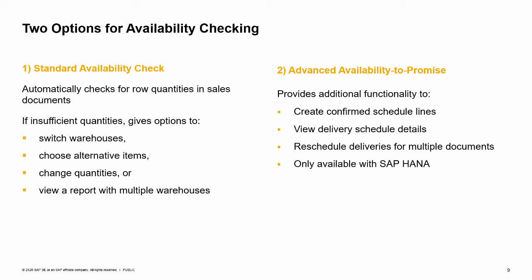The standard availability check automatically checks row quantities for sales documents. If there are insufficient quantities, this check gives you a pop-up box with options to switch warehouses, choose alternative items, change requested quantities, or view a report showing multiple warehouses. The standard availability check is available on both SAP HANA and MS SQL databases.